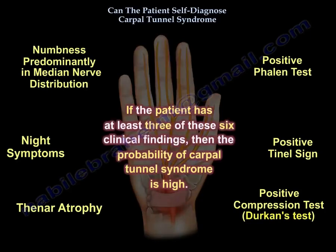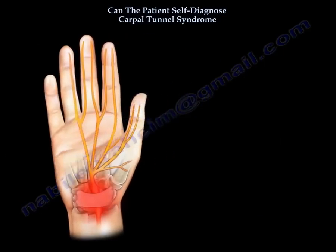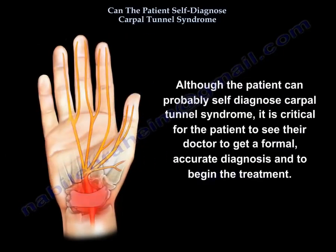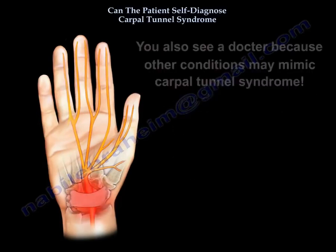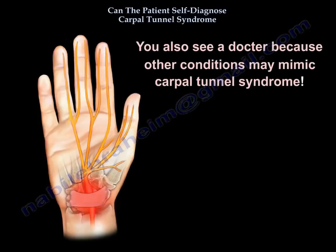If the patient has at least three of these six clinical findings, then the probability of carpal tunnel syndrome is high. Although the patient can probably self-diagnose carpal tunnel syndrome, it is critical for the patient to see their doctor to get a formal, accurate diagnosis and to begin treatment. Also, you should see a doctor because other conditions may mimic carpal tunnel syndrome.